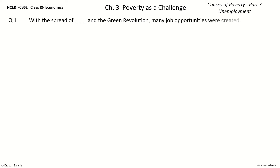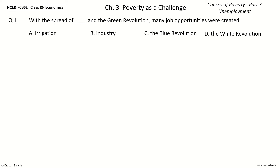Question 1: With the spread of Dash and the Green Revolution, many job opportunities were created. The options are: Irrigation, Industry, The Blue Revolution, The White Revolution. Your time to choose. And the answer is Irrigation. So, with the spread of Irrigation and the Green Revolution, many job opportunities were created.